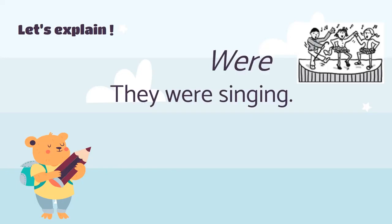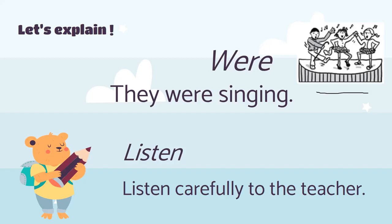For 'were': 'They were singing.' Because we have more than one person — can you see in this picture? They are singing now, but because it happened in the past, we say 'they were singing.' We use 'were' because there is more than one person. For 'listen': 'Listen carefully to your teacher. Listen carefully to your parents.'